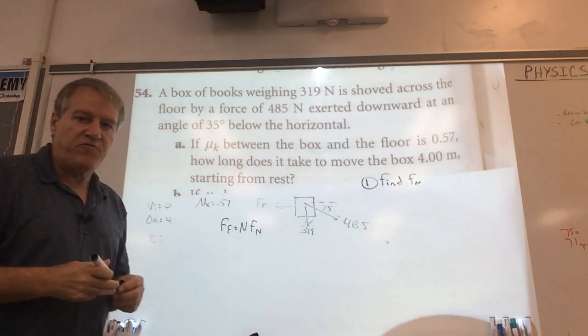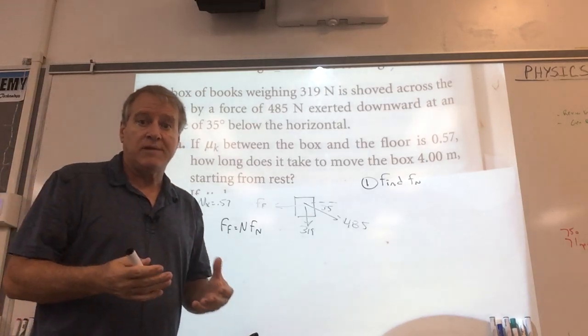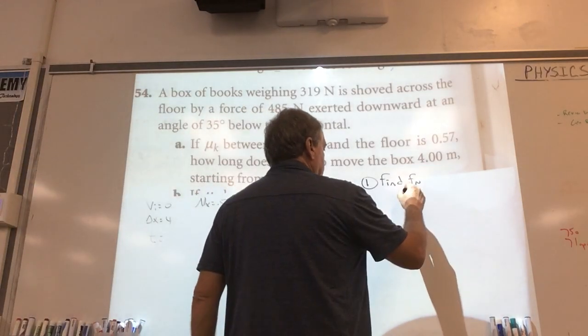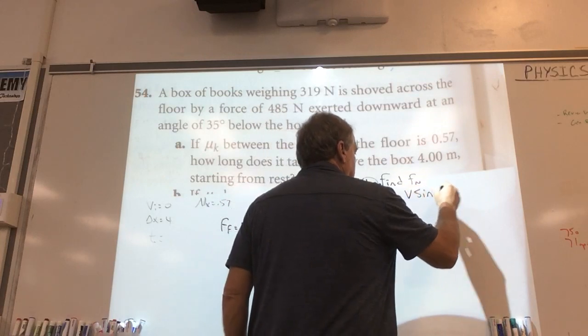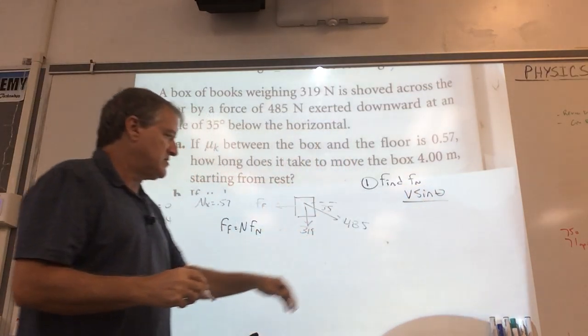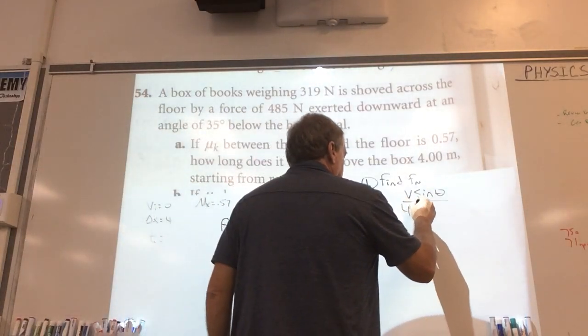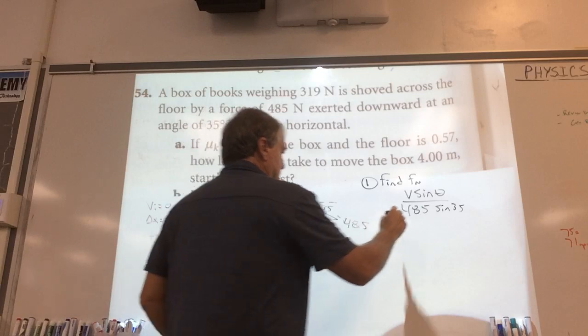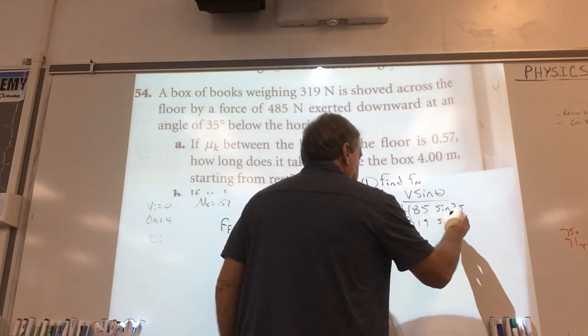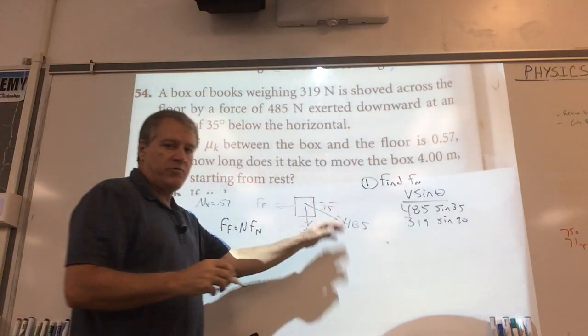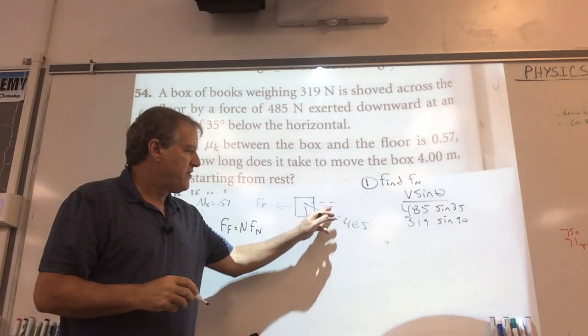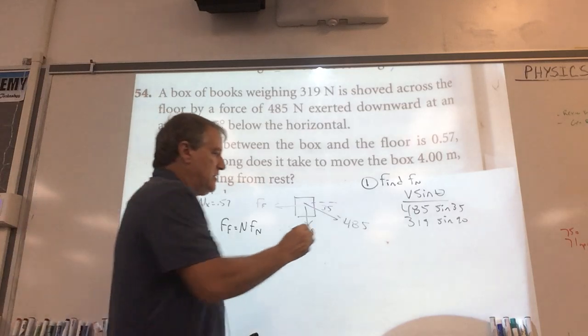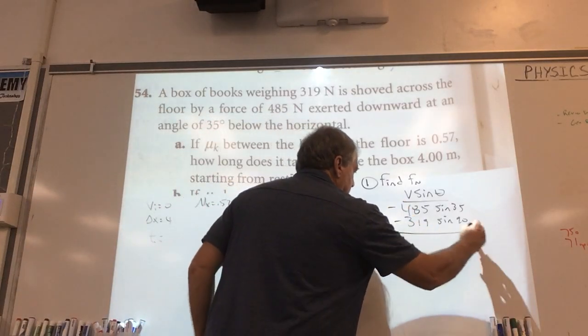Now, we know the normal is the sum of the forces in the y direction, right? The opposite of that. So let's find the sum of the forces in the y direction. We're just going to go v sine theta, all of my vectors here. So we've got 485 sine of 35, and we got 319 sine of 90. We all clear on that? 485 sine of 35, 319 sine of 90. Now, they're both going downwards in the y direction. So we're going to make them both negative.